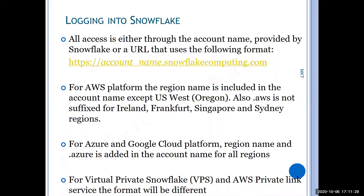You have to mention the account name, so you should know what the actual account name is. I will show you this during the demo. For AWS, except for US East (us-east-1), the region name is included in the URL and account name. For Ireland, Frankfurt, Singapore, and Sydney, the dot AWS suffix is also appended.